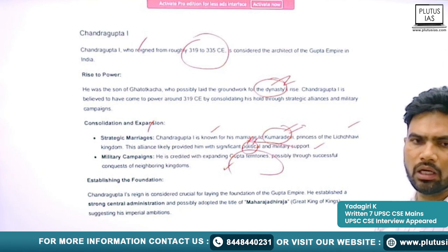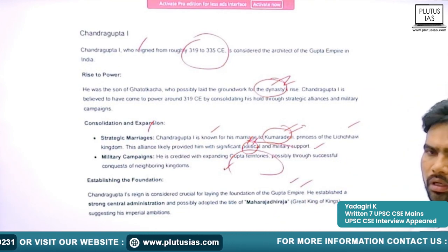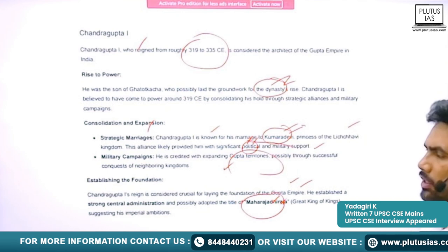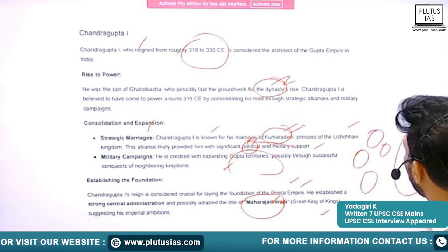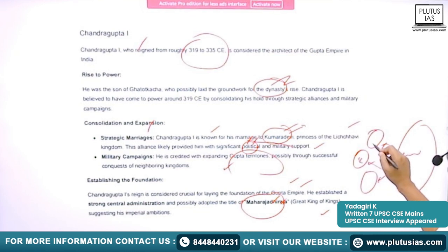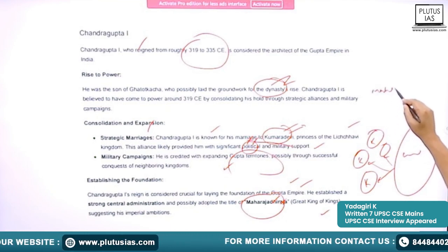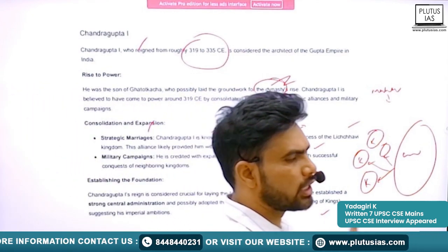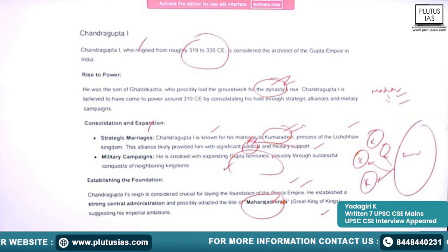Chandragupta I successfully conquered neighboring territories around Pataliputra. Because of his territorial successes, he assumed the title Maharajadhiraja — 'great king of kings' — since there were already kings whom he had conquered and brought under his control. From then on, this title was adopted by almost every subsequent king upon ascending the throne.